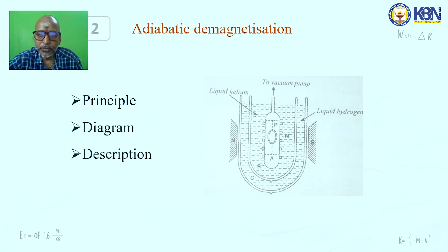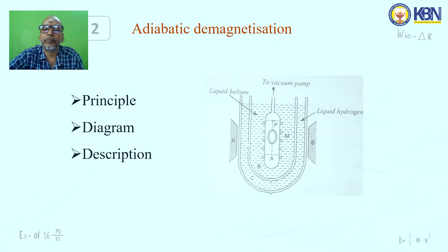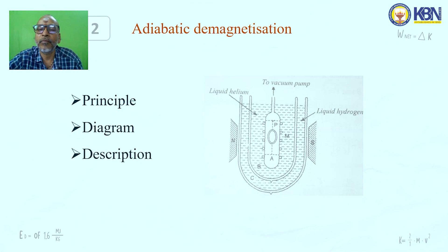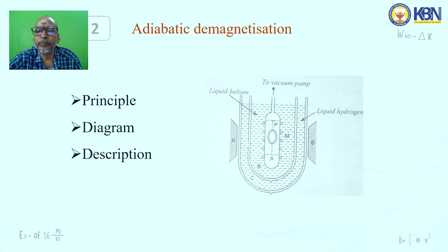The figure represents the different parts of the apparatus. The central part is a cylindrical vessel connected to a vacuum pump. The paramagnetic substance P is suspended inside it, and there is a coil wound around the cylindrical vessel M. This coil is used to calculate or measure the temperature.